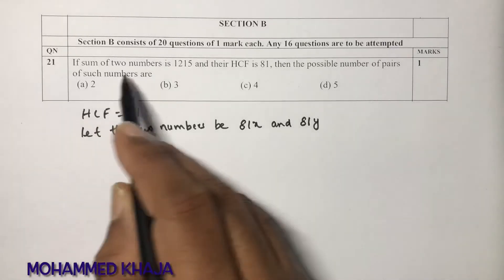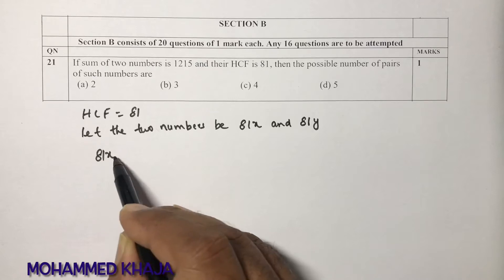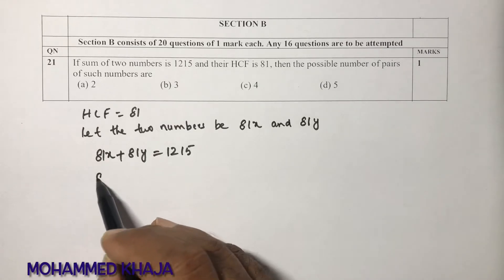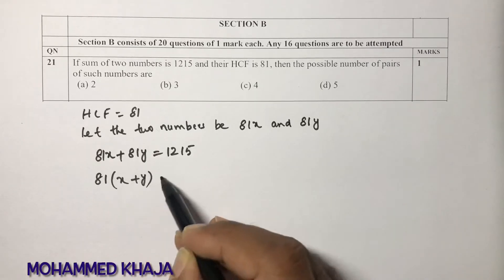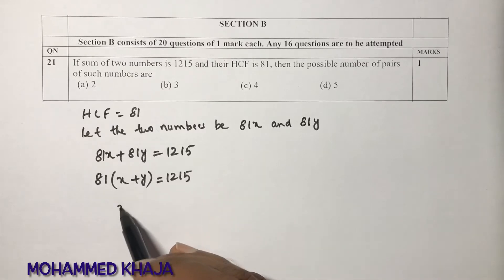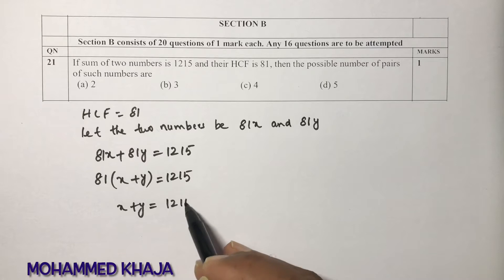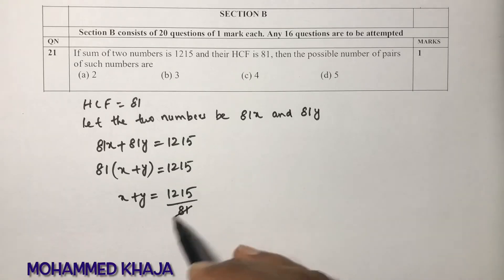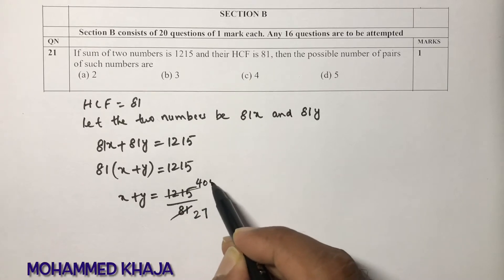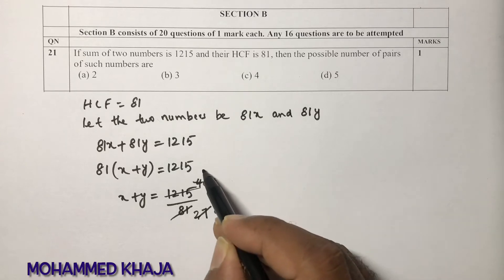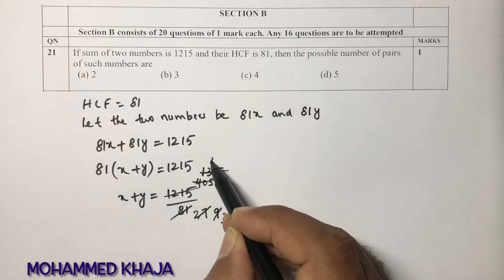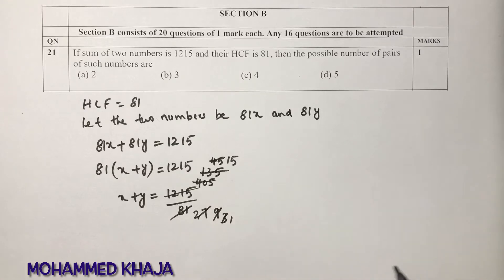So the sum of two numbers, 81x plus 81y, is 1215. If we take 81 common, x plus y equals 1215 divided by 81. Canceling this, 3 times 27, 3 times 4, we get 15. So x plus y is 15.